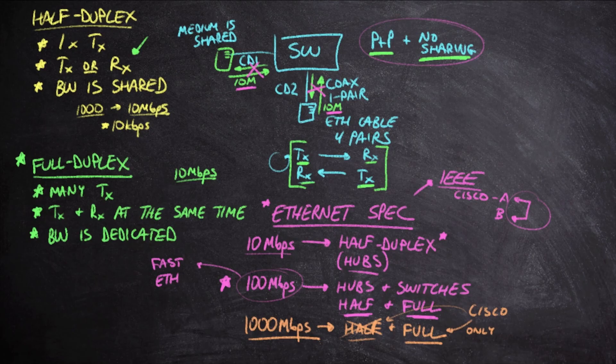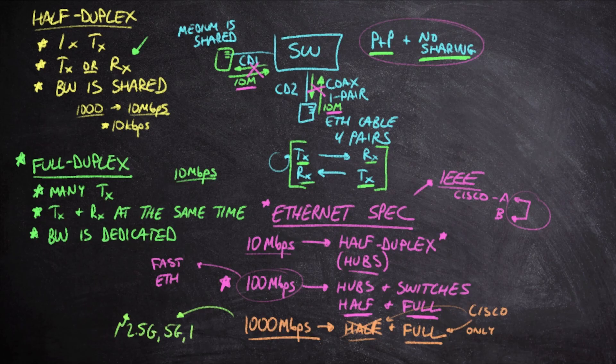Now, anything, finally, above 1,000 megabits per second, so anything over 1,000 megabits per second, so we're talking about 2.5 gig, 5 gig, and 10 gig, all of these only operate at full-duplex. So finally, we got rid of half-duplex operation, but it required us going to multi-gig and 10 gig in order to do that.